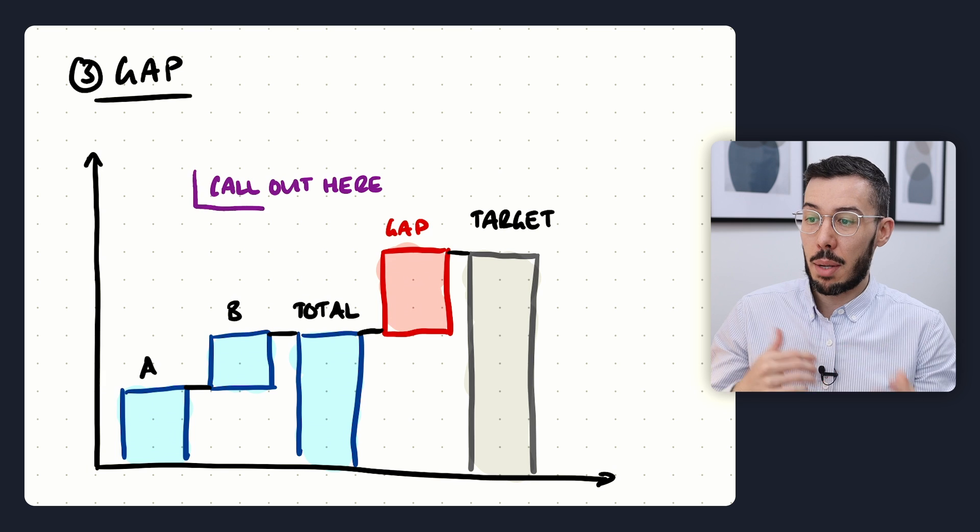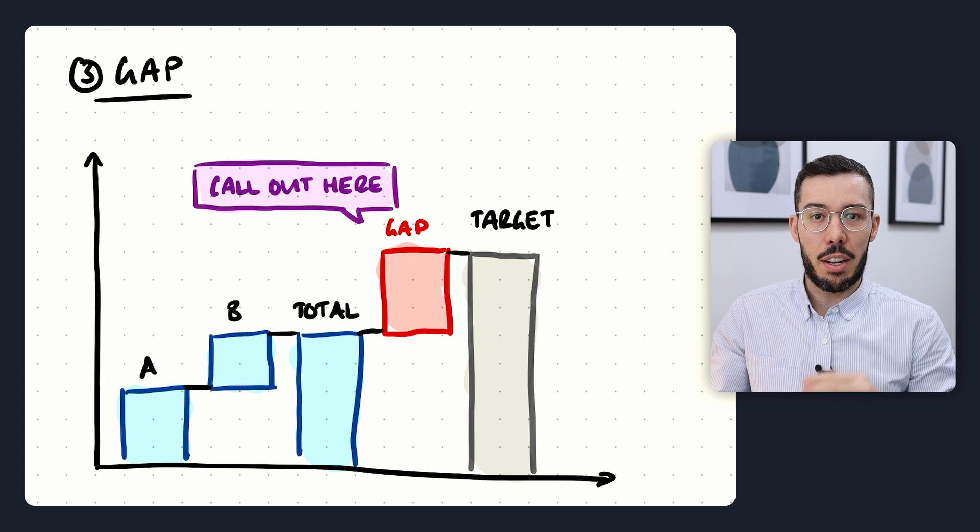Gap waterfall charts are often paired with callouts that explain why there's a gap or its magnitude — callouts are very powerful for this chart type. The gap waterfall chart is particularly powerful for the complication section of your slide deck. If you remember the storylining framework: you start with a situation, describe a complication — such as needing to hit a target but only having certain actuals, requiring you to address a gap — and then move to the resolution, which explains how to close that gap.